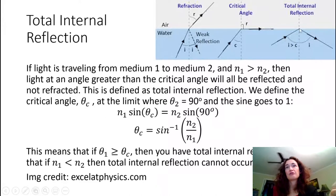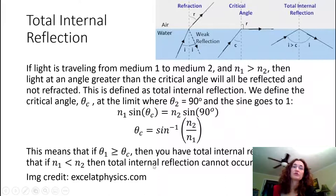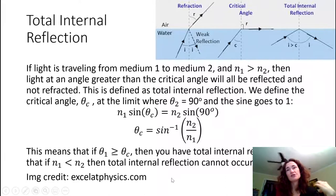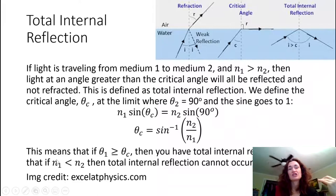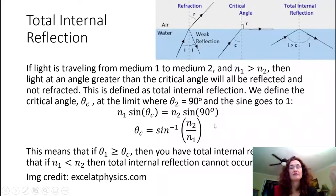You get total internal reflection when θ1 is greater than or equal to θc. Also note that if medium 1 has an index of refraction less than medium 2, total internal reflection cannot occur — this follows mathematically from Snell's law.